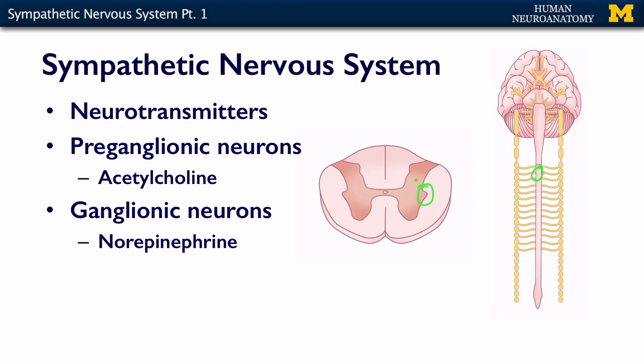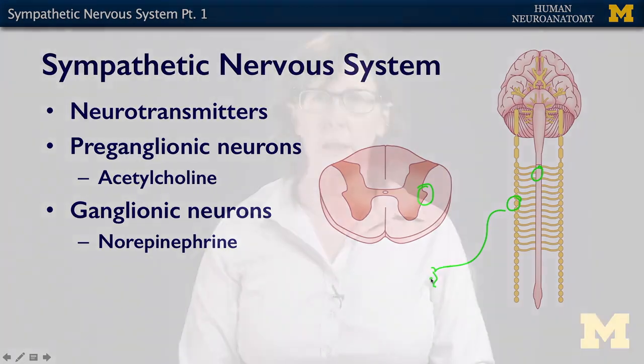The neurotransmitter used by the ganglionic neurons that then go out and synapse on the target is norepinephrine. In the next section, we'll talk more about the distribution and the functions of the sympathetic nervous system.